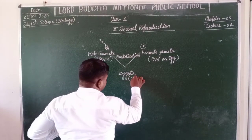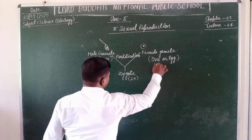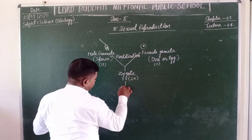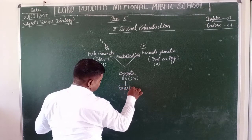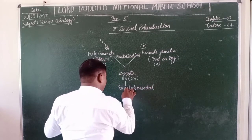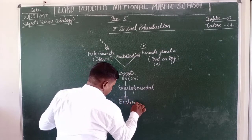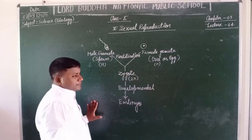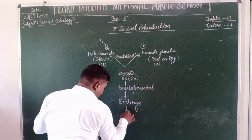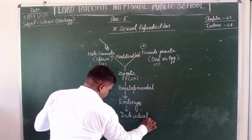The zygote contains a haploid and haploid number of chromosomes to become diploid. After the developmental process, the zygote further develops into an embryo. The embryo, after the gestation period, gives rise to the birth of an individual.